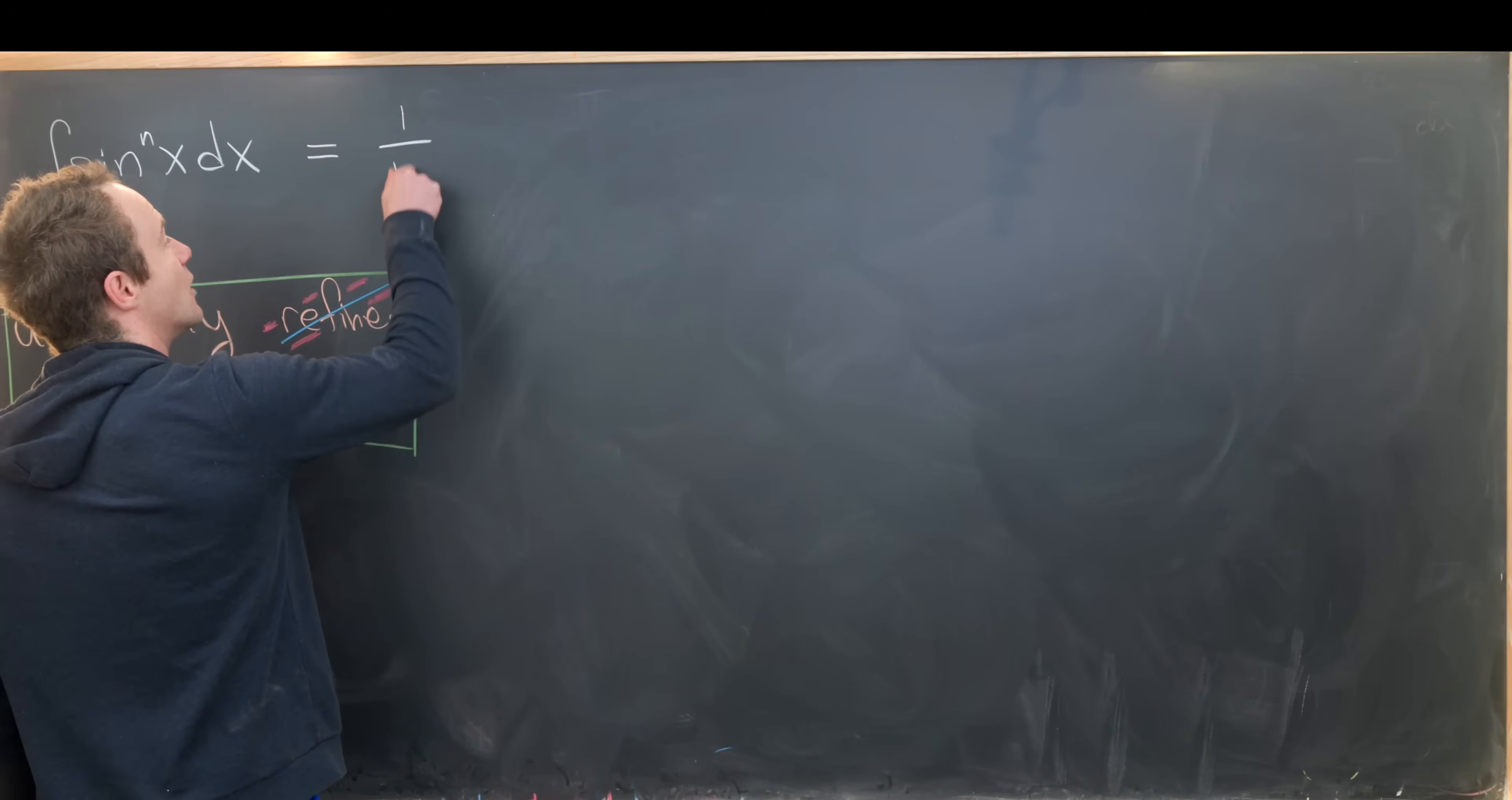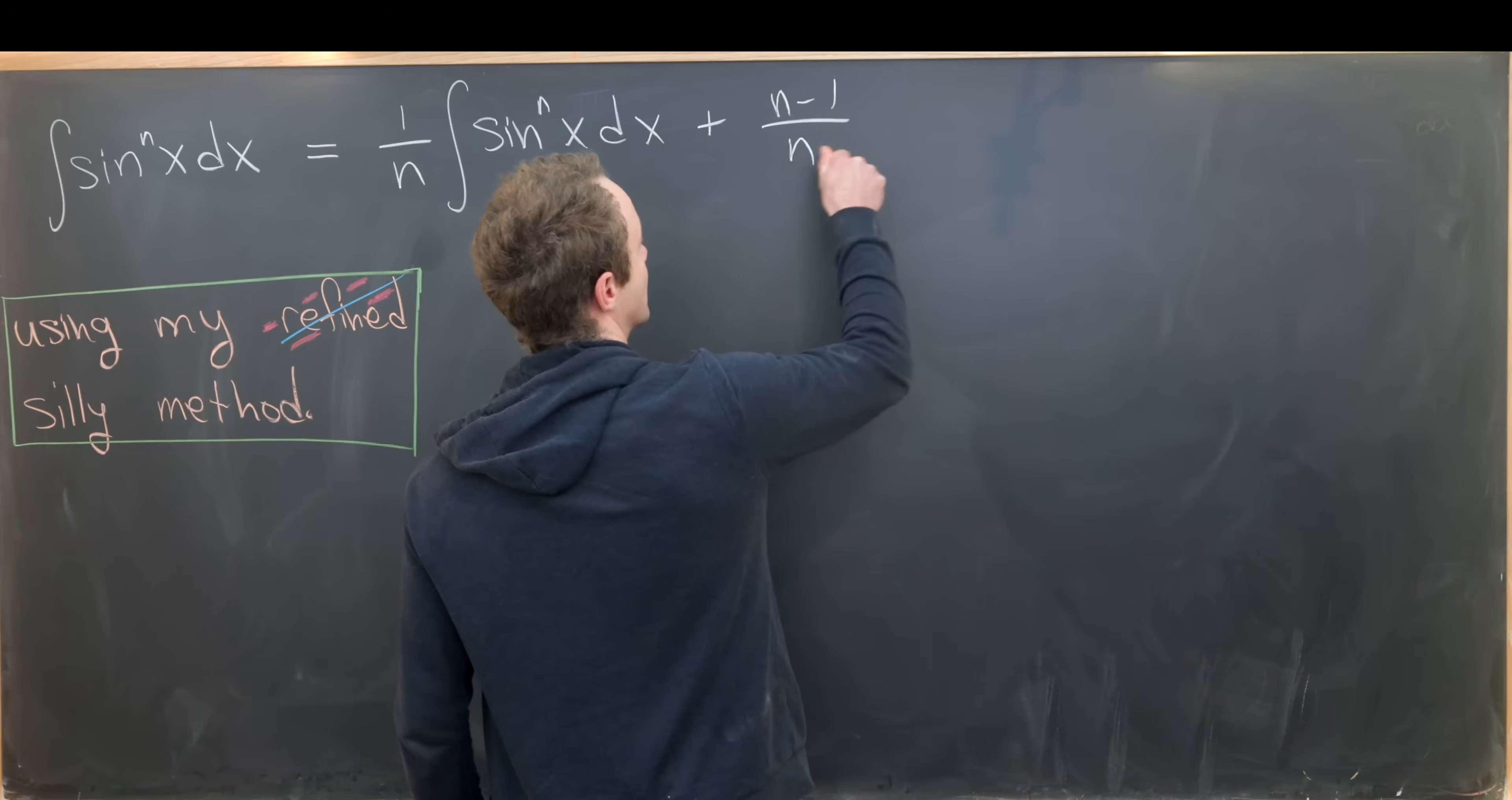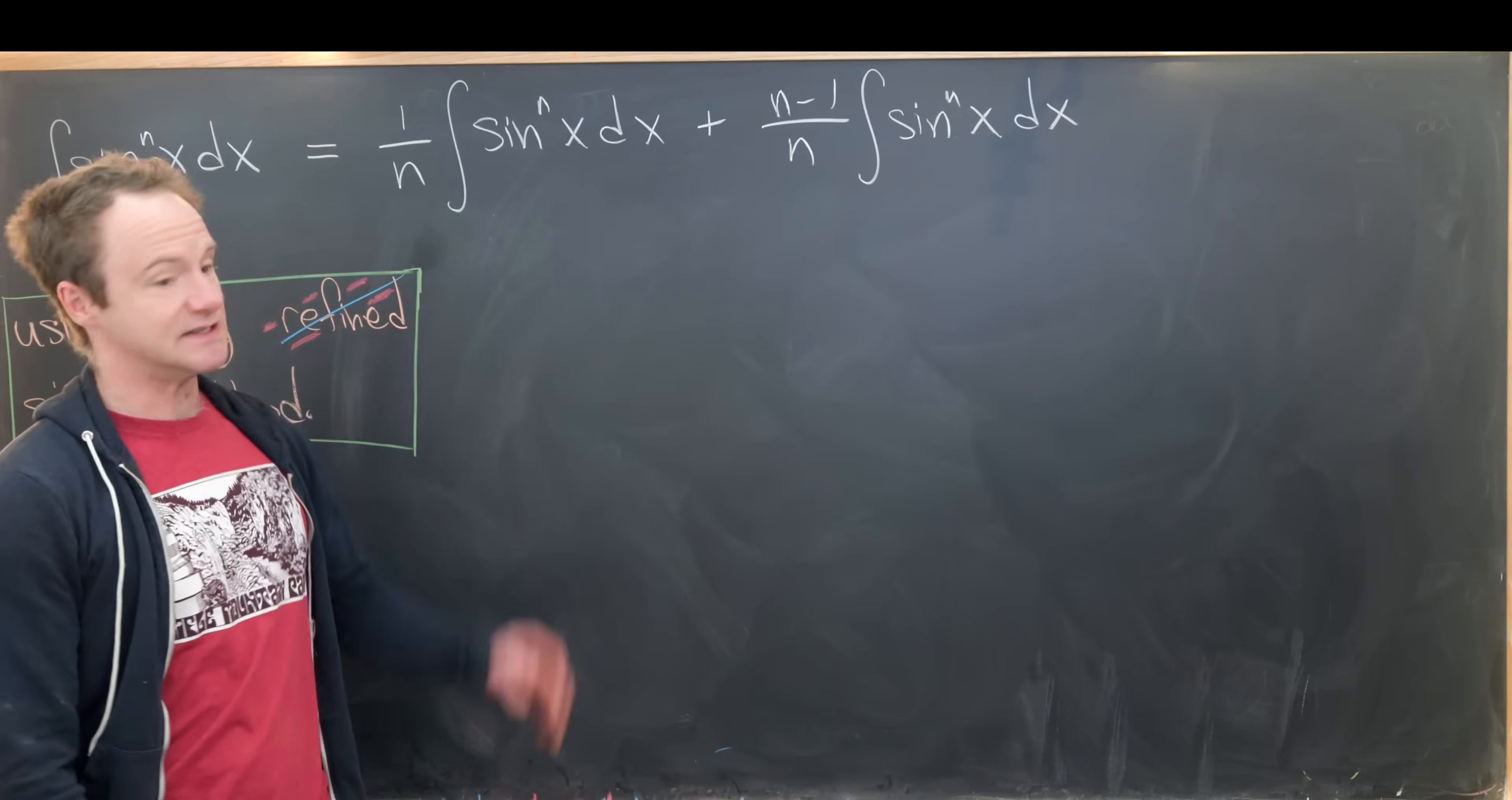So I have one over n and then the integral of sine nx dx plus n minus one over n and then the integral of sine to the nx dx. So I haven't done anything. I've just split the number one up into these two things.